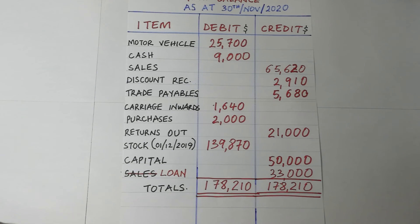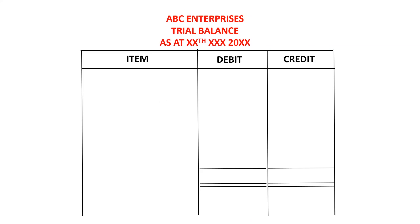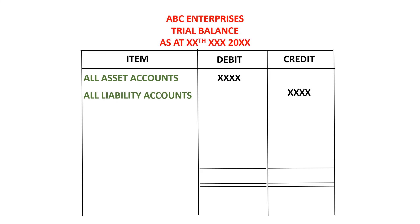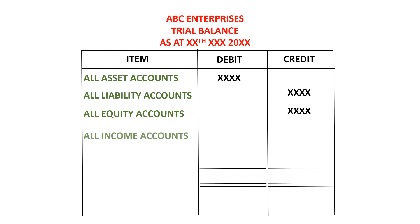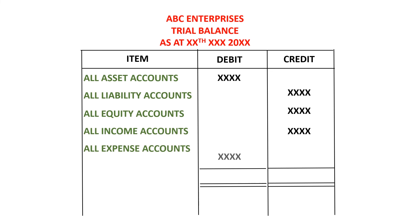In a nutshell, when dealing with trial balances: all asset accounts have debit balances; all equity accounts have credit balances; all liability accounts have credit balances; all income accounts have credit balances; and all expense accounts have debit balances.